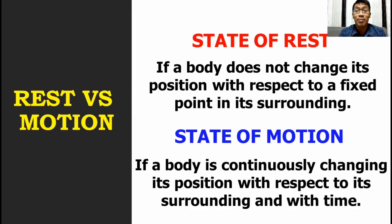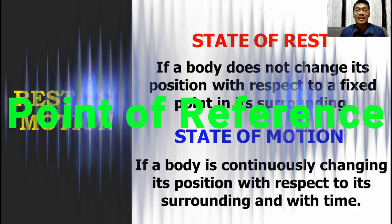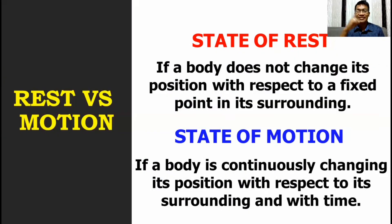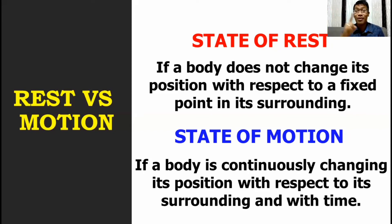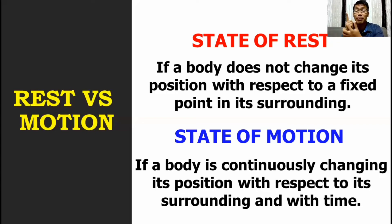For us to know if a body is at rest or in motion, we need to have the so-called point of reference. Let's say for example — am I moving? It's hard to say if I am moving or not, because we have no set point of reference. If my point of reference or the fixed point is the position of my finger, therefore, it is moving.